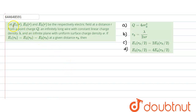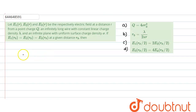In this question, let E1(r), E2(r), and E3(r) be the respective electric field at a distance r from a point charge, an infinitely long wire with constant linear charge density lambda, and an infinite plane with uniform surface charge density sigma. If E1 at r₀, E2 at r₀, and E3 at r₀ are equal at distance r₀, we need to find which relation or option would be true.